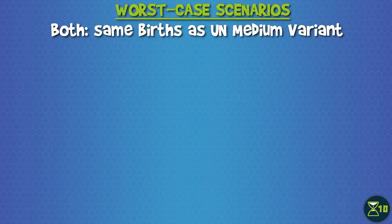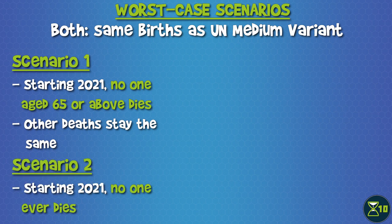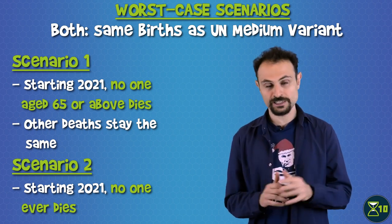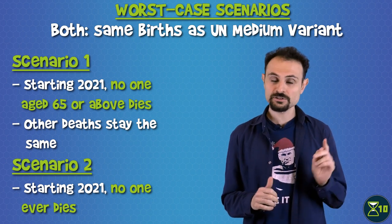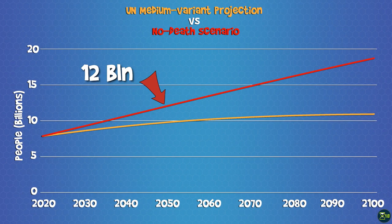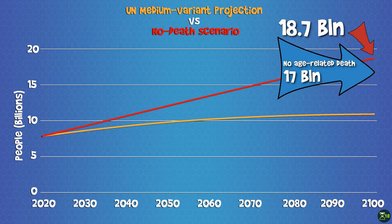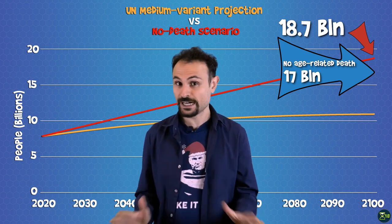The second gross overestimate is like the first, except we're going to assume that starting 2021, no one at all of any age will die. It should be clear enough why this is definitely an overestimate. The chart looks like this. In 2050, we would hit nearly 12 billion, and in 2100 would be at about 18.7. This is still worse than the UN's high-variance scenario, and of course worse than our previous scenario, but not by much considering that, again, we're assuming no one ever dies.